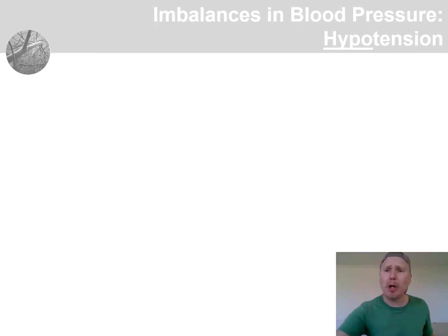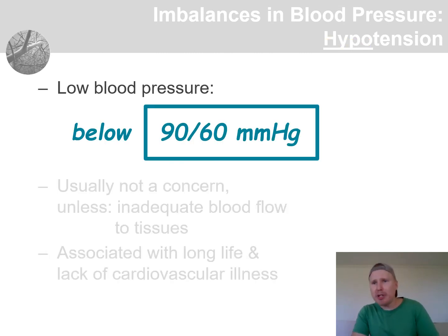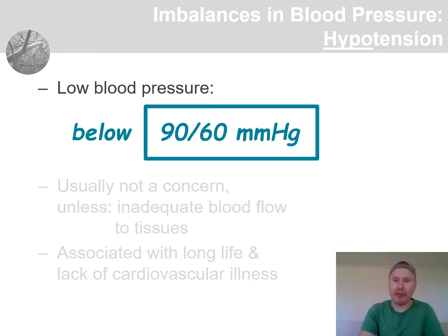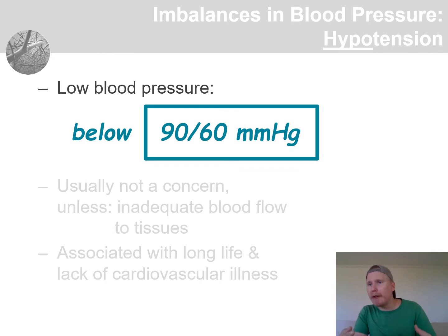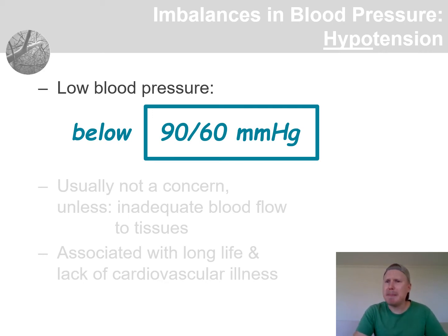Another kind of blood pressure issue is hypotension, where the blood pressure is lower than normal. The cutoff here is given as 90 over 60 millimeters of mercury. Note that this is not usually a significant issue — we would rather deal with this than with too high blood pressure. It becomes a medical problem when there is insufficient blood supply to the tissues due to low blood pressure.